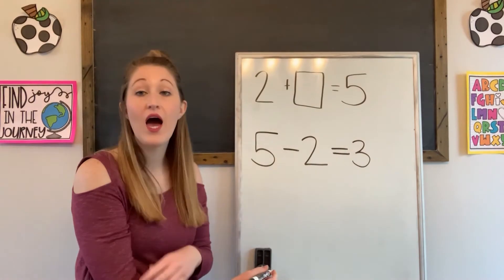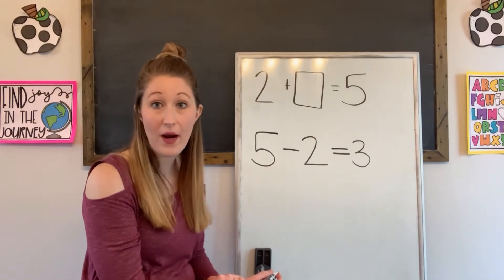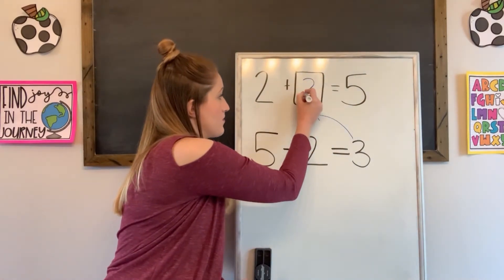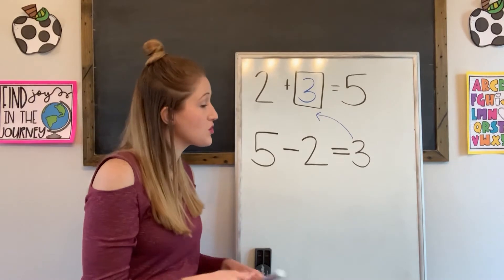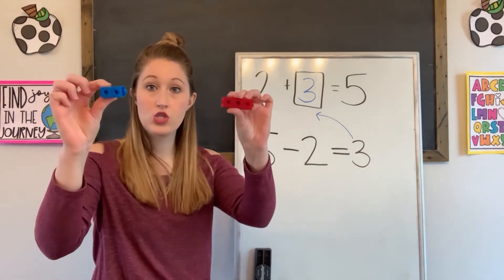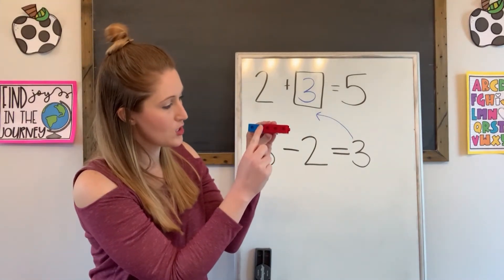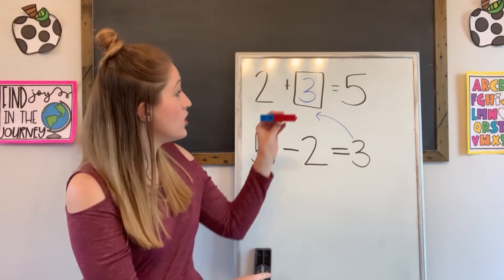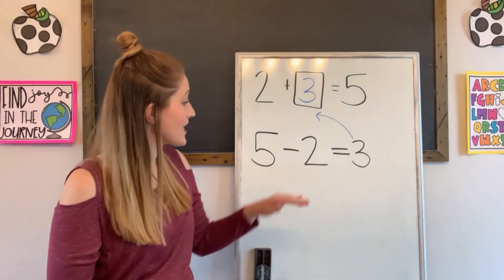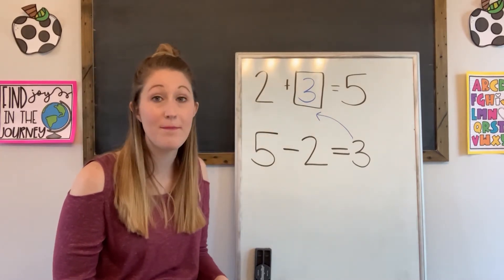To check my answer, I can plug that number in. I can take this three and plug it in here. Does two plus three equal five? I have three and I have two — two plus three, let's see how many there are: one, two, three, four, five. So two plus three does equal five. We're able to take a subtraction problem and use it to help us find the addition problem when there's a missing piece.